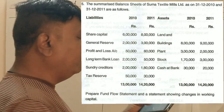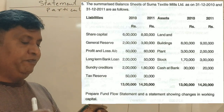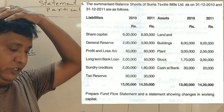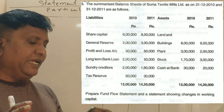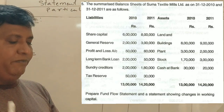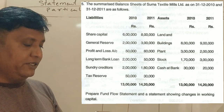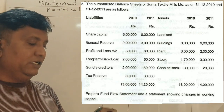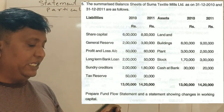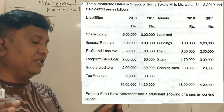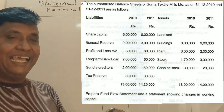In the 2014 freshers, this is a 6-mark question. We do the 2014 algorithm question first. The question is: they summarize balance sheets of Suma Text Documents Limited as on 31st December 2010 and 31st December 2011. Liabilities and assets are given for 2010-11: share capital, general reserve, profit and loss, long-term bank loan, sundry creditors, and tax reserve.